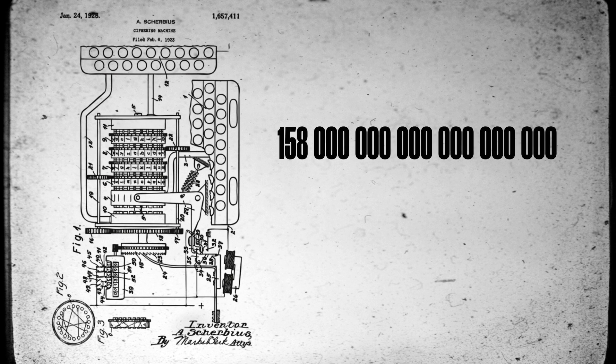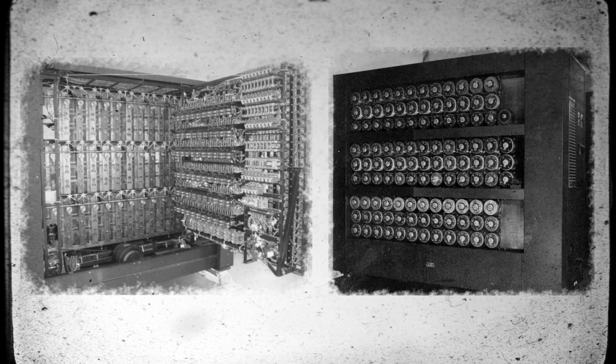This was believed to be an impossible task, as Enigma has more than 158 quintillion starting combinations. However, thanks to Turing's out of the box thinking they succeed, which by some estimates shortened the war for two years and saved millions of lives.